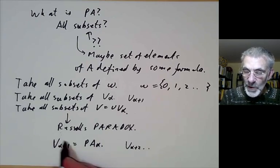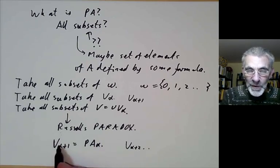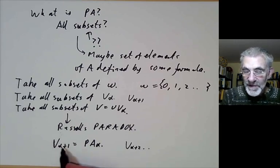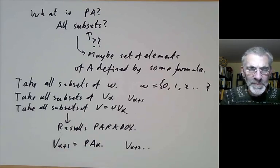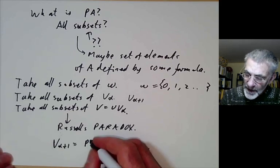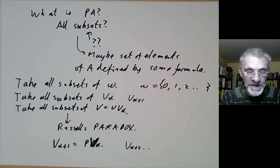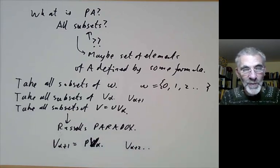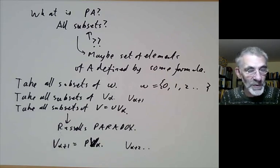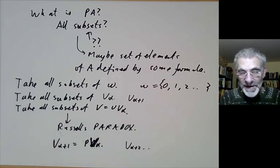So you've got this horrible problem that the power set of V alpha plus one is defined by quantifying over things that are more complicated than V alpha plus one. And this is something known as an impredicative definition where things are kind of defined in terms of themselves. So trying to pin down exactly what the power set of a set is runs into all these problems of impredicativity.